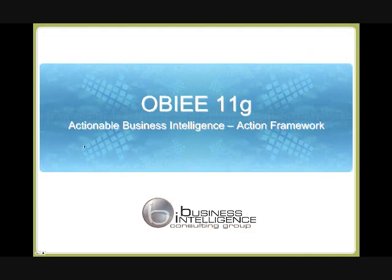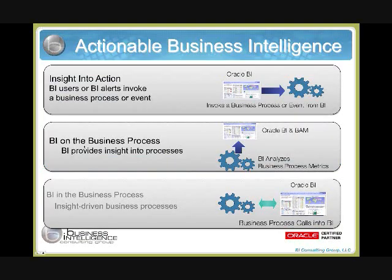The second feature, and probably the most intriguing, is the Action Framework. It is a service-object architecture technology that integrates BI intelligence analysis with external business processes. For example, you can take BI information and invoke external processes. Say you're a sales director and you notice a region where profit has been going down steadily — you can click an action link and automatically schedule a meeting with the regional director in charge of that section.